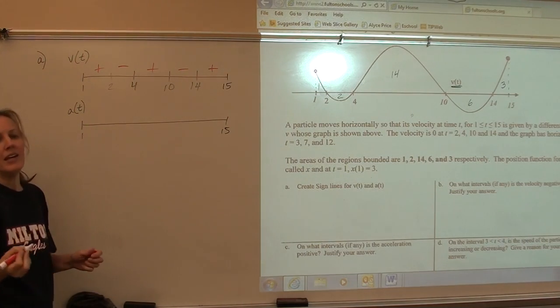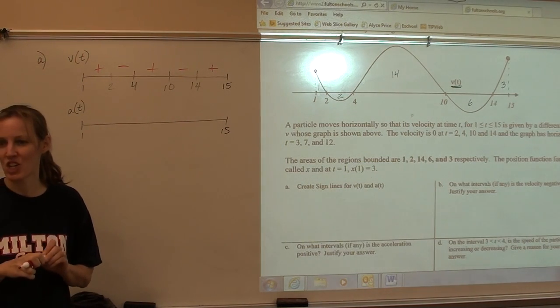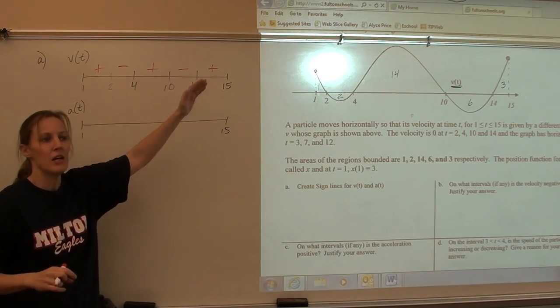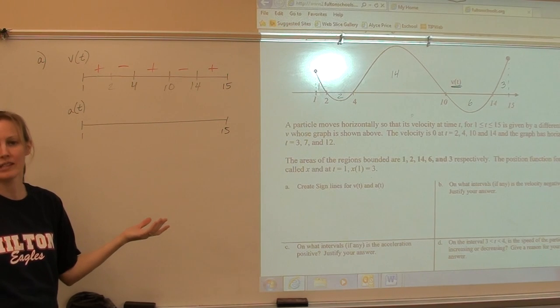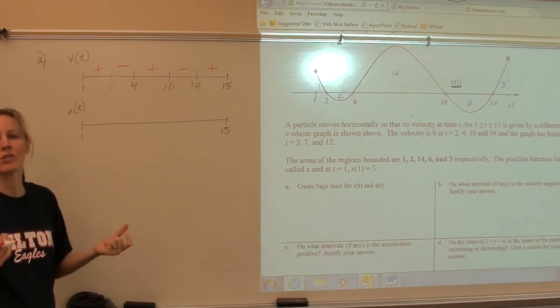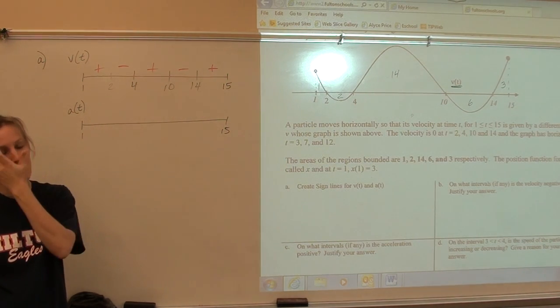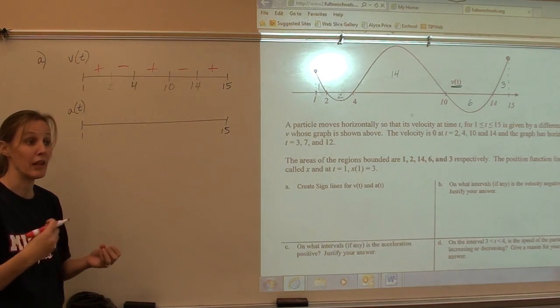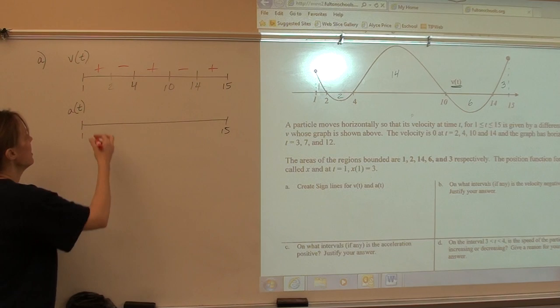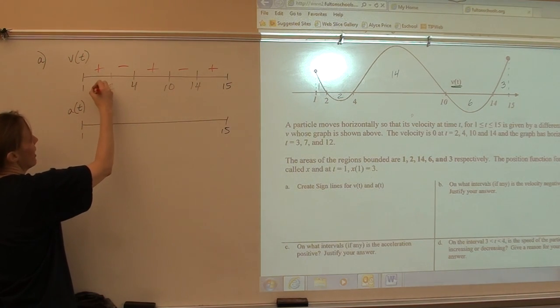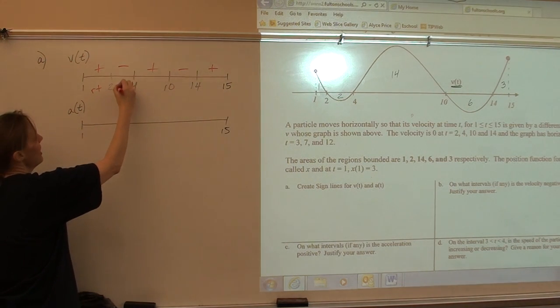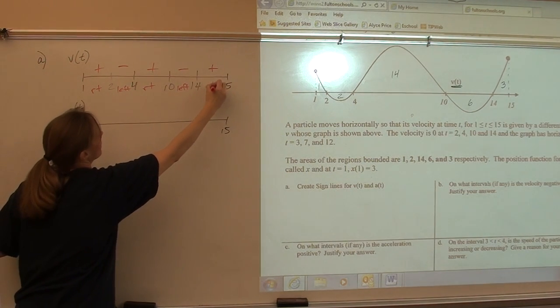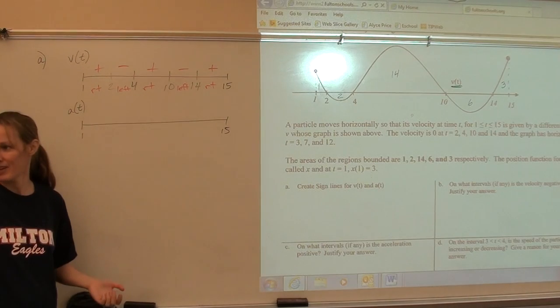Now, if this was curve sketching, underneath the sign line, we'd write little arrows going up and down, right? But it's not curve sketching. This is PVA. So the sign of the velocity instead determines, since it's horizontal motion, if the particle is moved to the right or the left. So this particle is moving to the right, left, right, left, right.